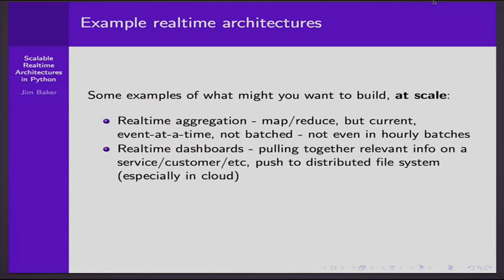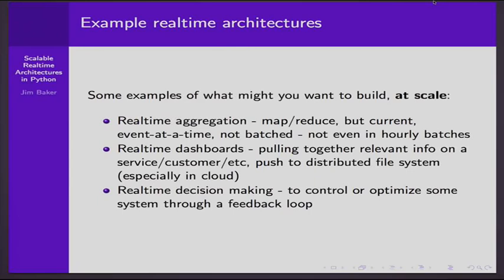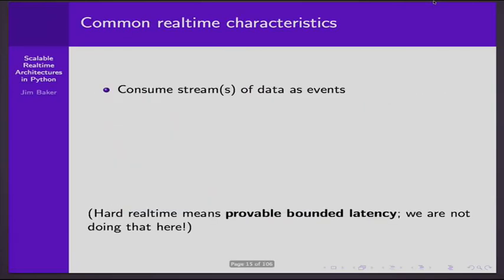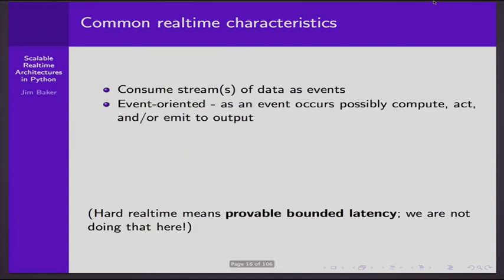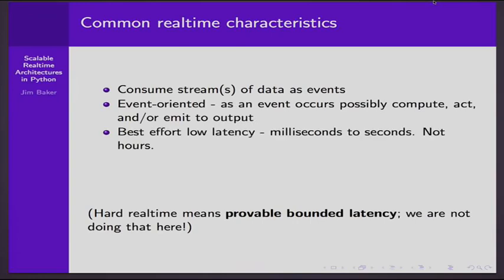I'm particularly interested in the idea of decision-making, where you will be responding to information in your environment and taking some action. So what are some common real-time characteristics of such systems? You're consuming streams of events; you are event-oriented. As an event occurs, you may take some action, compute something, or do something downstream. You want to minimize the latency from the arrival of that event to that computation — ideally down to seconds or below. Such systems are often called complex event processing or stream processing.